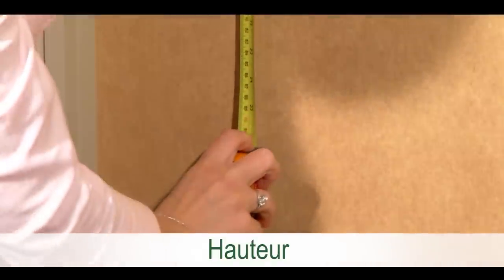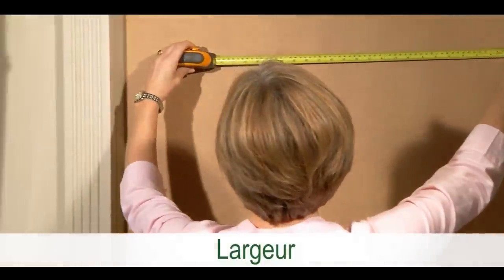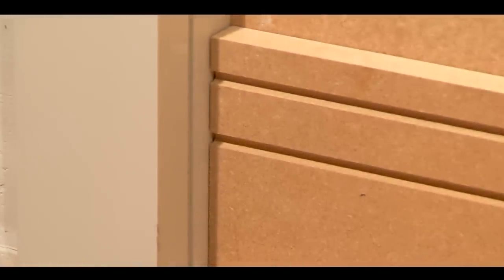You need to measure the door height and width. As you can see, we have put a skirting board on the door already to act as a kick plate and visually to represent the base of the bookcase.